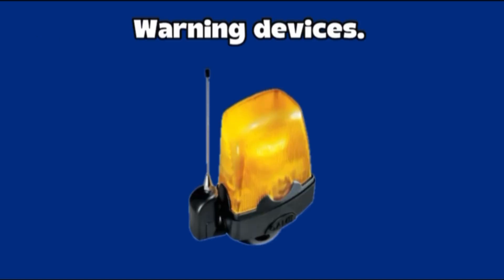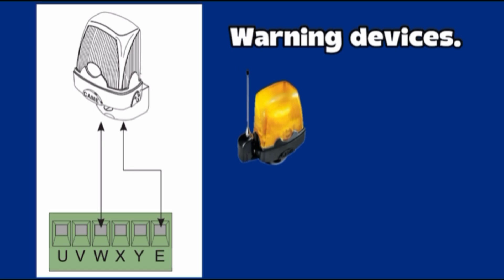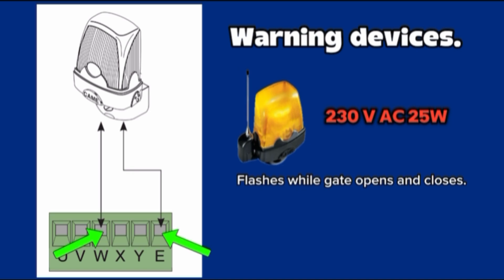Warning devices. Flashing lights should be 230 volt AC and 25 watt maximum. Flashes while gate opens and closes. Terminal E and Terminal W.